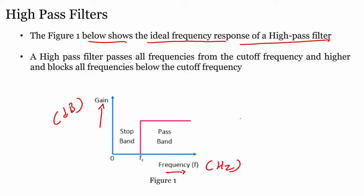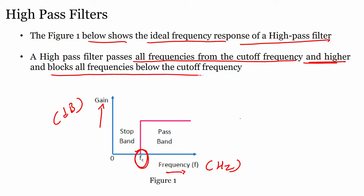Figure 1 shows the ideal frequency response of a high pass filter. The y-axis is gain and the x-axis is frequency. A high pass filter passes all frequencies from the cutoff frequency and higher, and blocks all frequencies below the cutoff frequency.